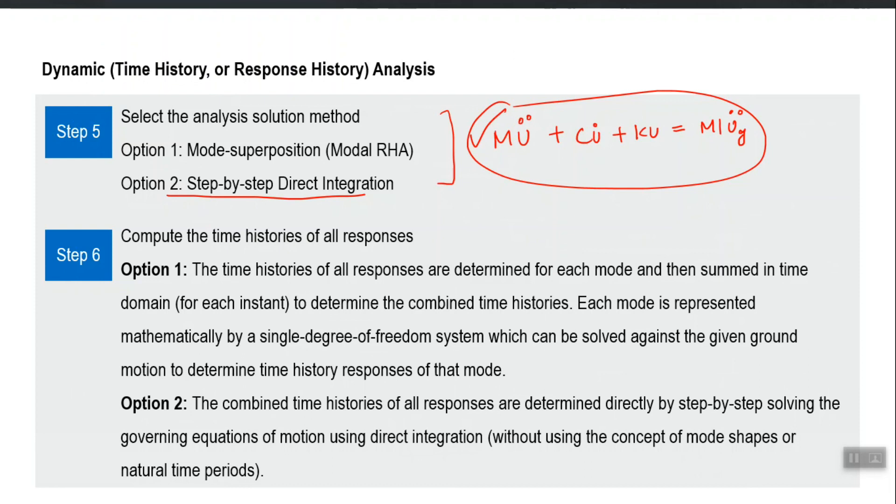Therefore, option two is sometimes considered more accurate, especially if you just consider two, three modes in option one compared to option two which is considering everything.